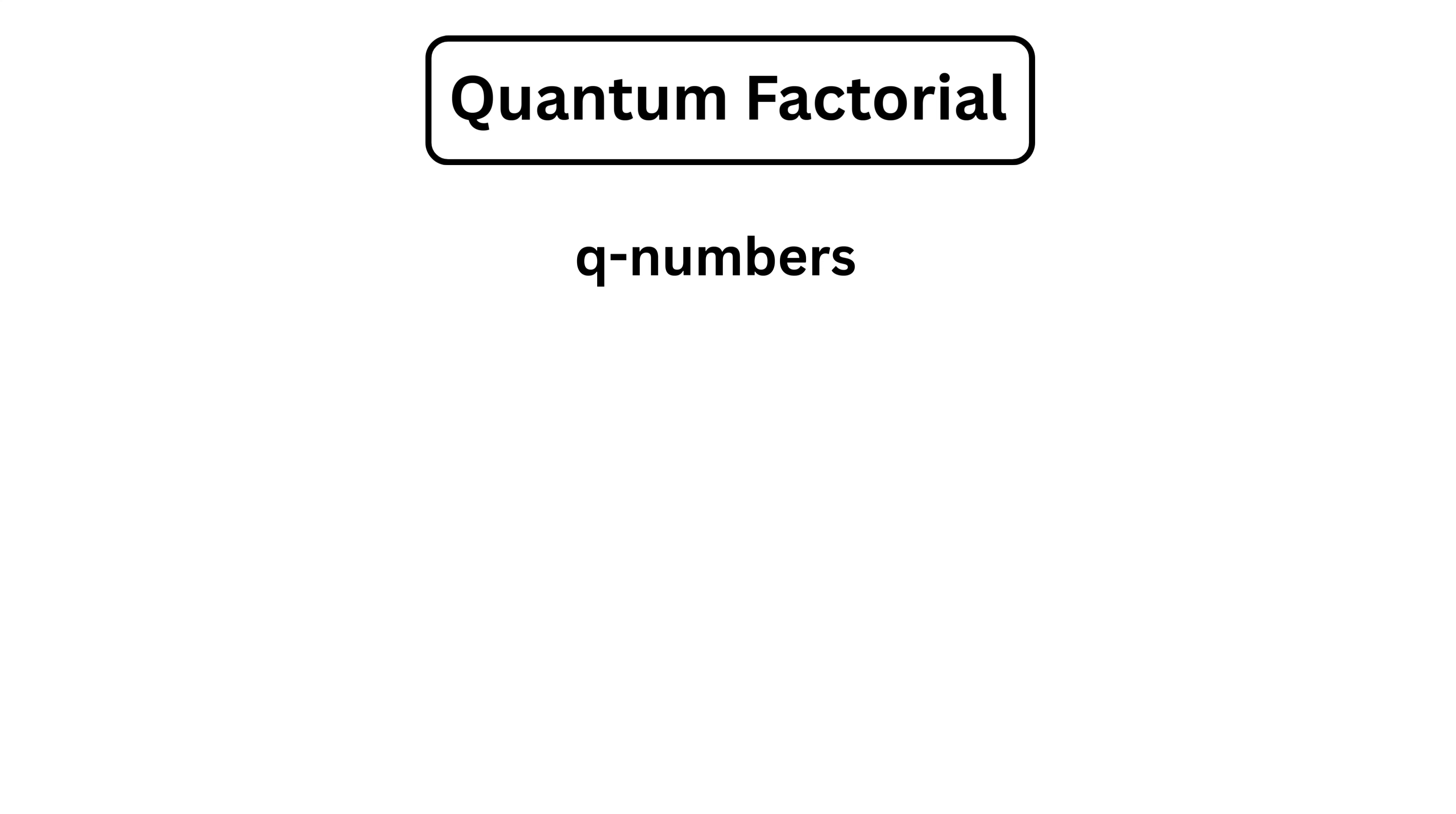A q-number for any n is written as open bracket n, close bracket, with a small q. And it is equal to 1 minus q to the power n divided by 1 minus q. So the quantum factorial of n is the product of all q-numbers from 1 to n.